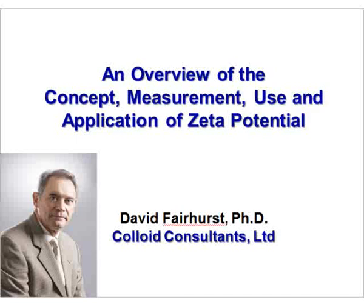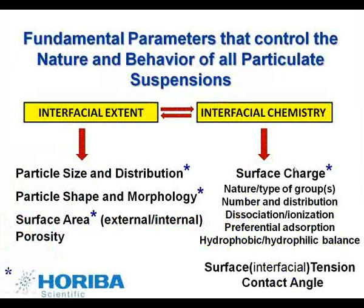What is the zeta potential and why measure it? To address these questions, we will briefly discuss the two fundamental parameters that control the nature and behavior of every system in which one phase is dispersed in another: the extent of the interface of the dispersed phase and the interfacial chemistry of the dispersed phase. These two parameters are not independent. For example, particle comminution such as grinding may expose new surfaces and alter the interfacial chemistry. Alternatively, a change in interfacial chemistry brought about by adjustment of solution pH can result in particle aggregation, reducing the exposed surface area.